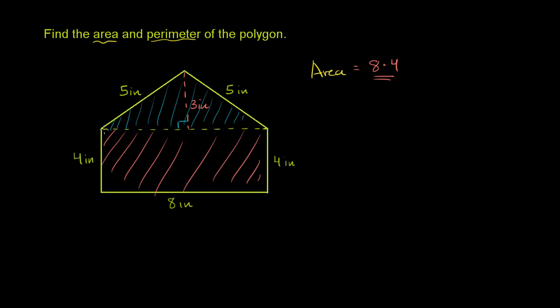And that actually makes a lot of sense, because if you just multiplied base times height, you would get this entire area. You would get the area of that entire rectangle. And you see that the triangle is exactly half of it.